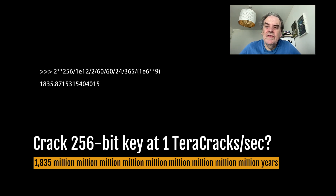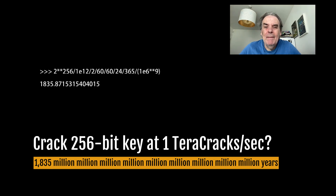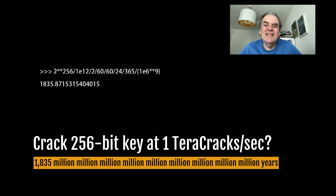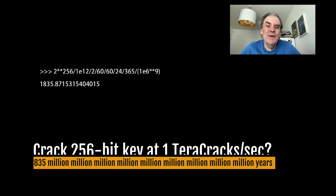For a 256-bit key this is 1835 million million million million million million million million million million million million years. That's a lot of years just to crack a single 256-bit encryption key, and that's the average time. It will take you double that time as the worst case, so it could take you 3600 million million million million million million million million million years to find it if you're a little bit unlucky.